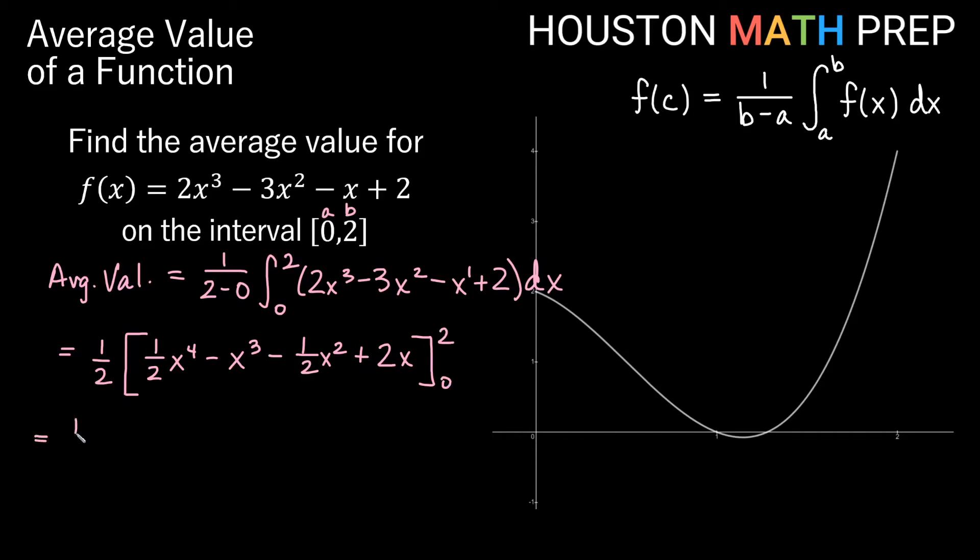Let's go ahead and plug in and do that. So we'll get 1/2 times, if we plug in 2, we'll get 2⁴, which is 16. Divide by 2, that's 8. Minus 2³, which would be 8 also. Minus, if we plug in 2, 2² would be 4, and half of that would be 2, so we get minus 2. 2 times 2, if we plug in to 2x, will give us 4 there, so we'll get plus 4.